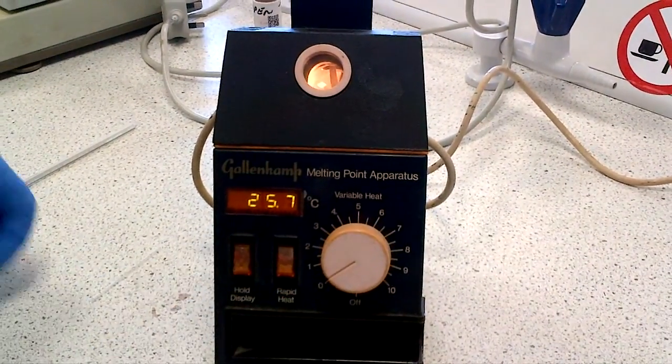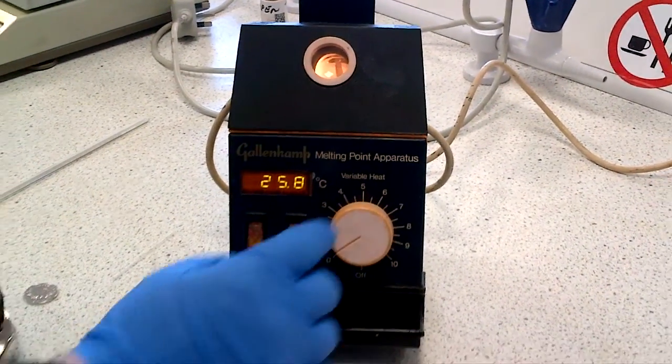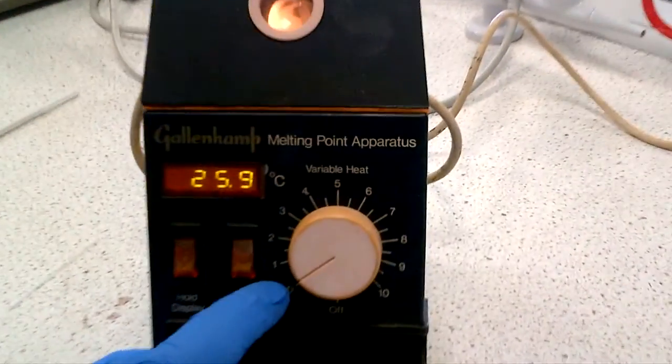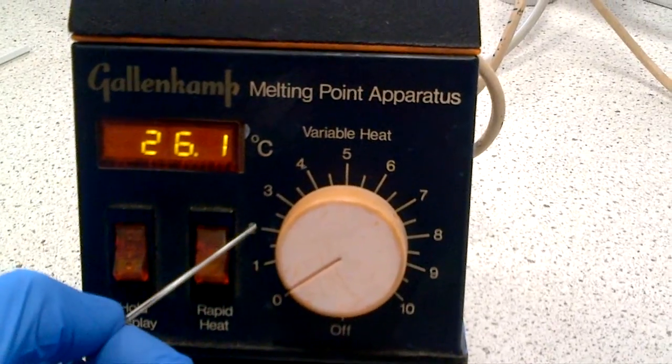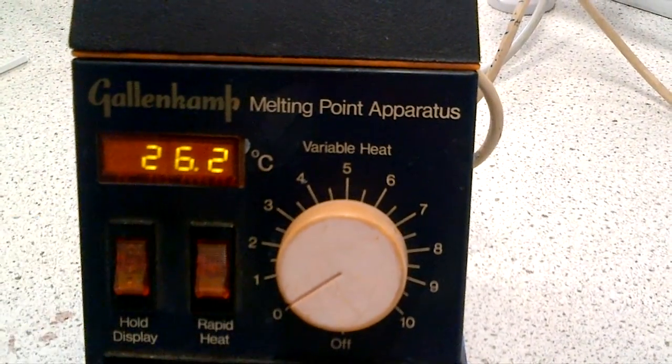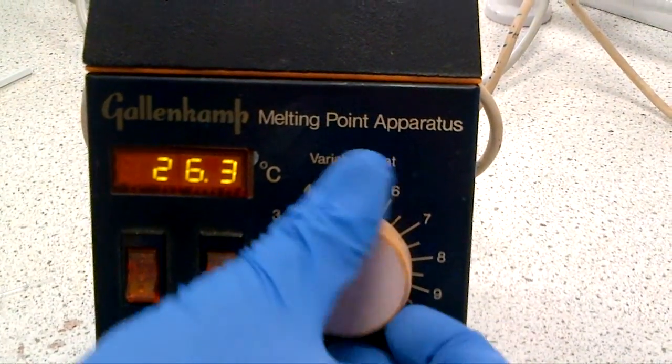And just to say, all melting point apparatus here at Salford are between 0 and 9, and each unit is about 30 to 40 degrees worth of energy, so 30 degrees C, 60, 90, 120, 150, up to about 270, 300.